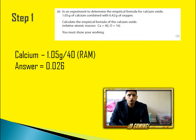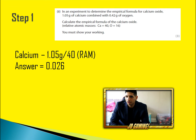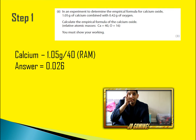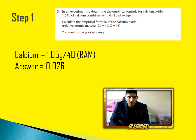The first thing you want to do is look at that question. You want to take 1.05 grams, which is the amount of calcium, and divide it by 40, because that is the relative atomic mass of calcium. The answer is 0.026. That's step one.